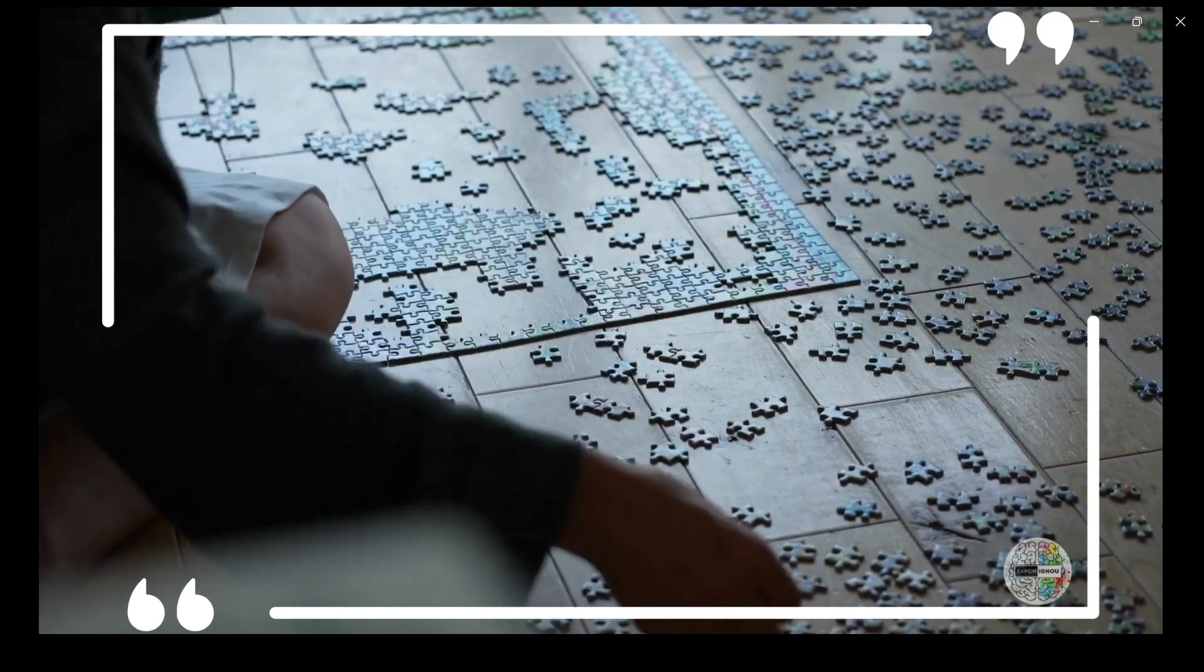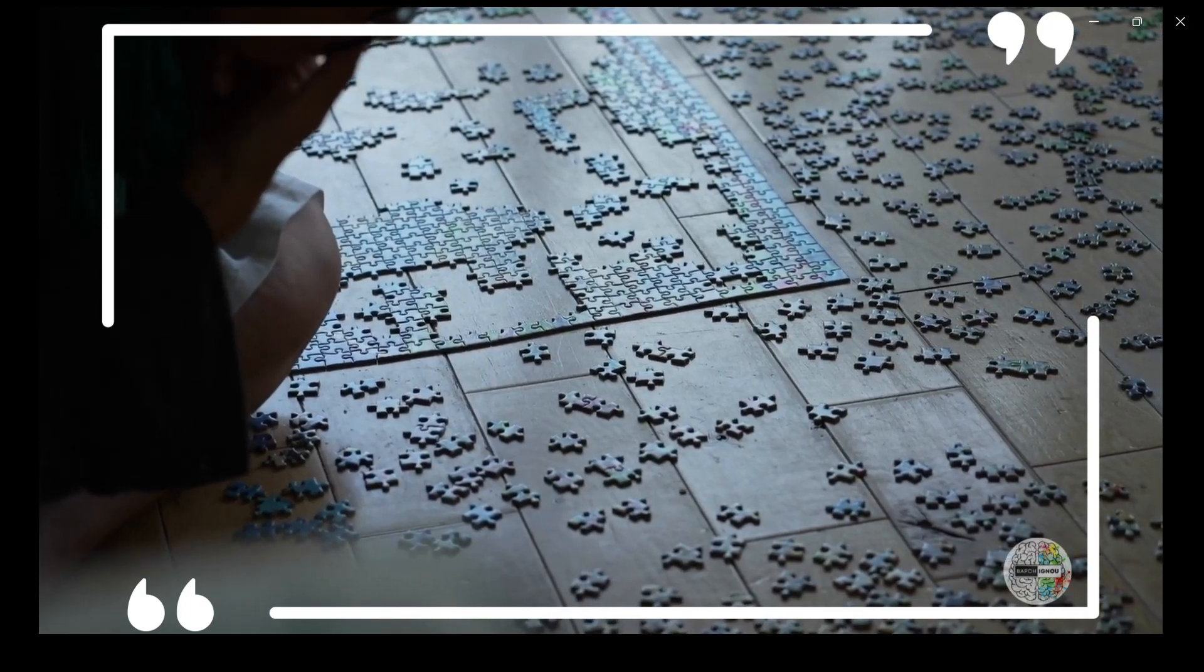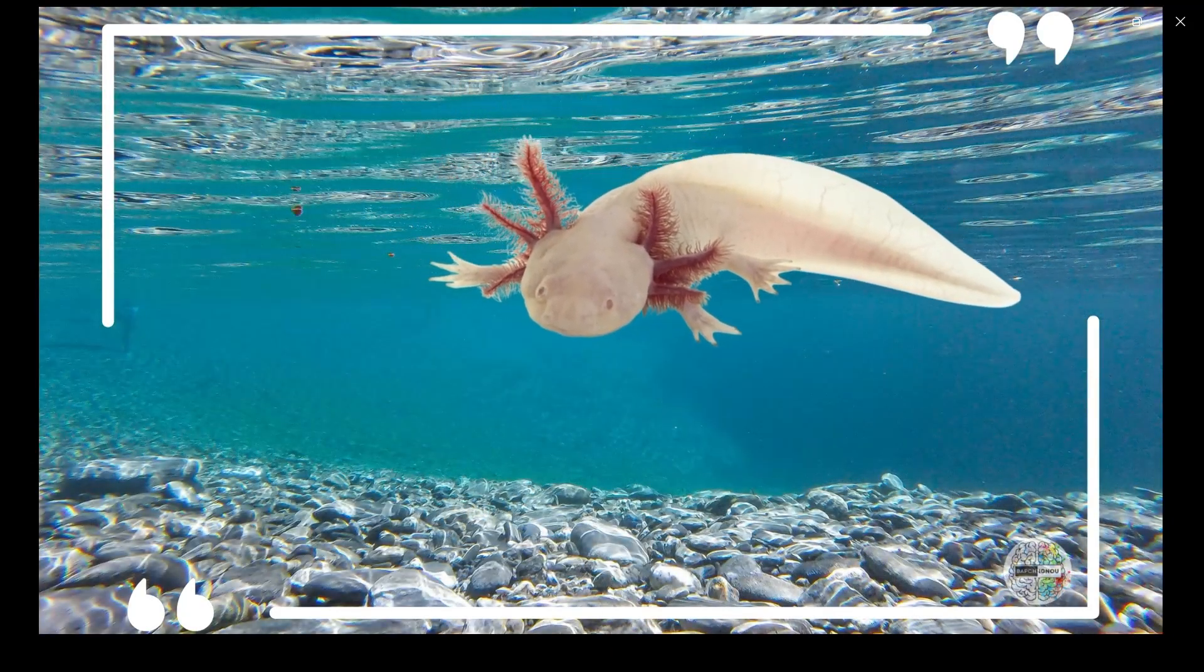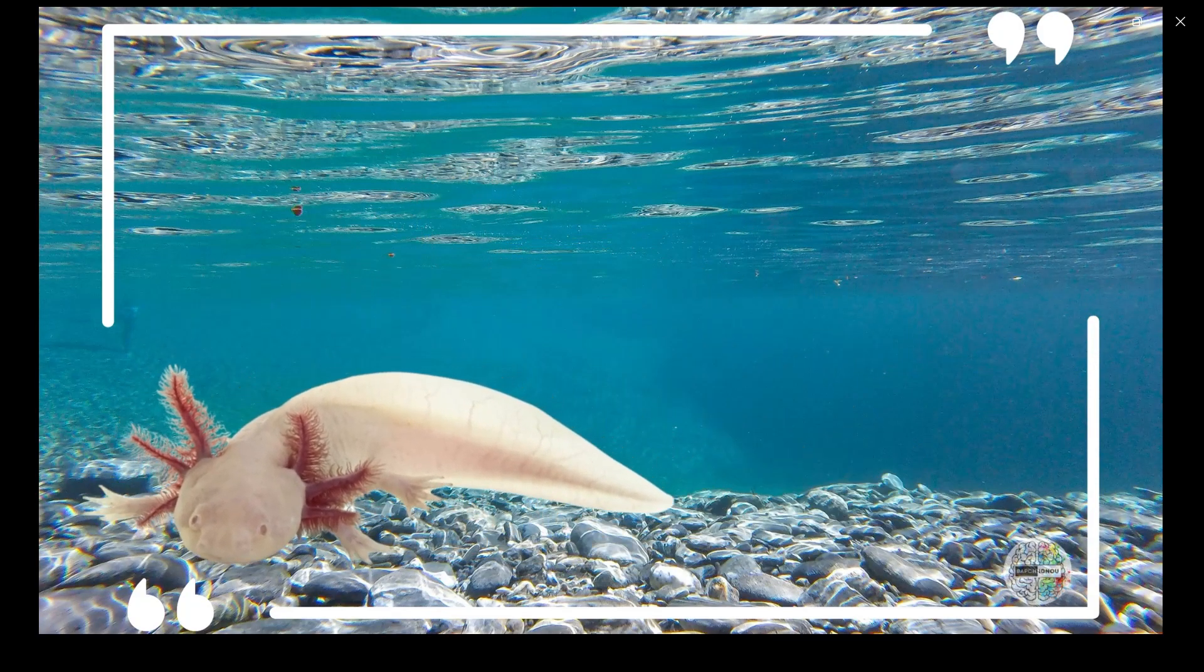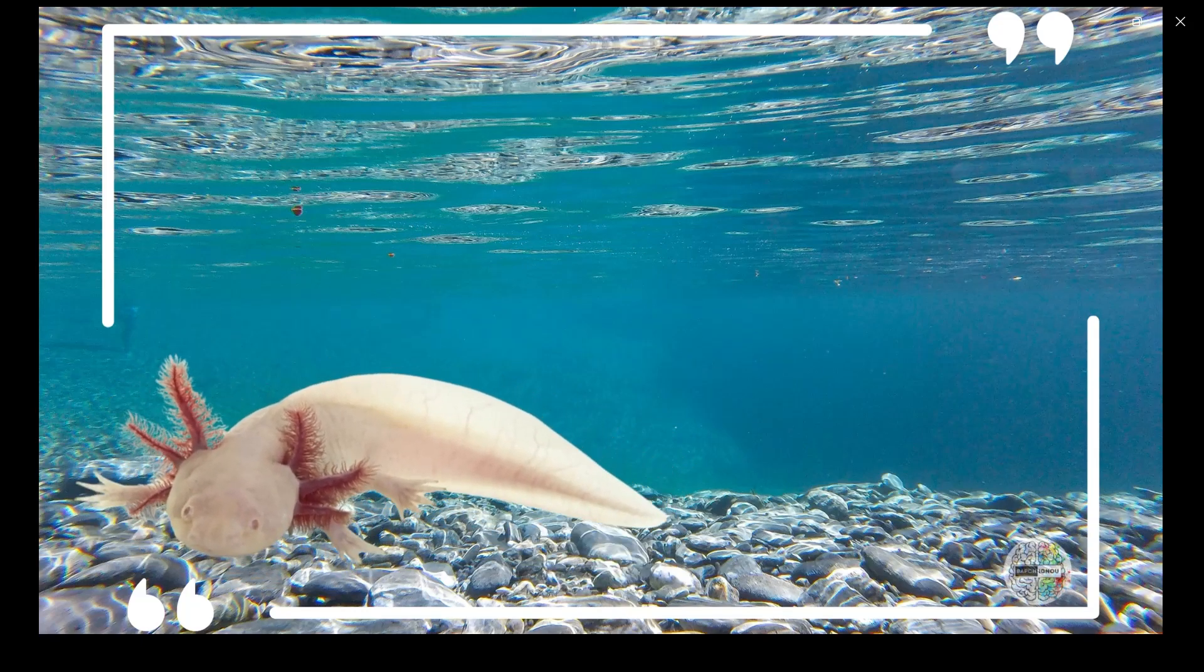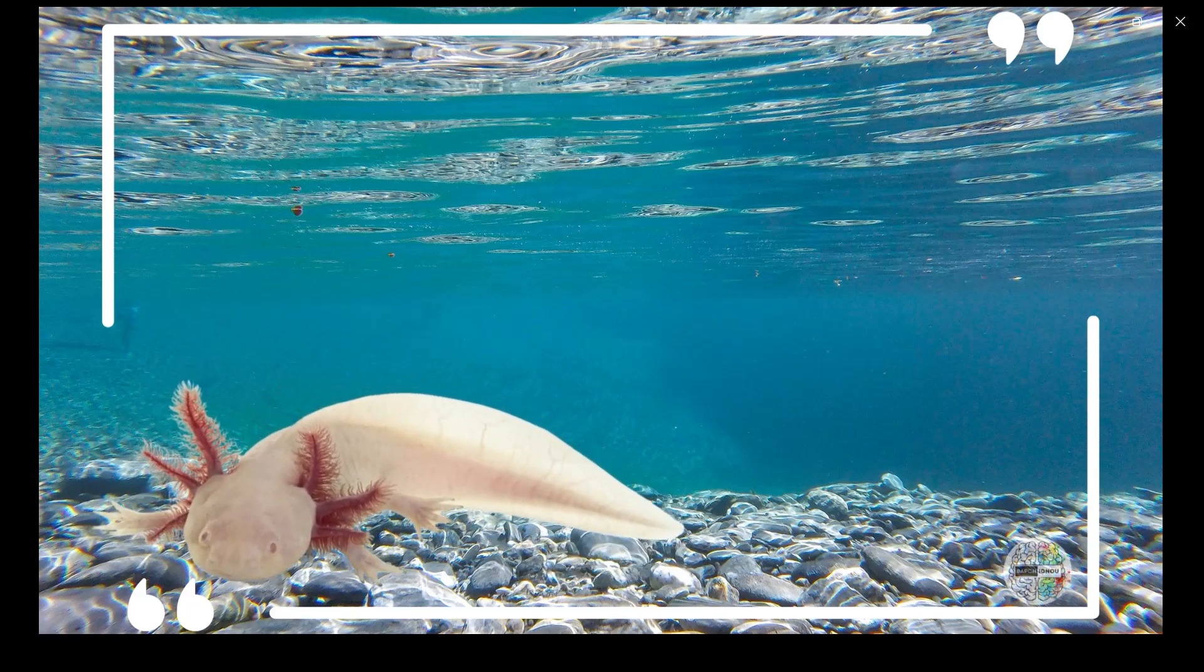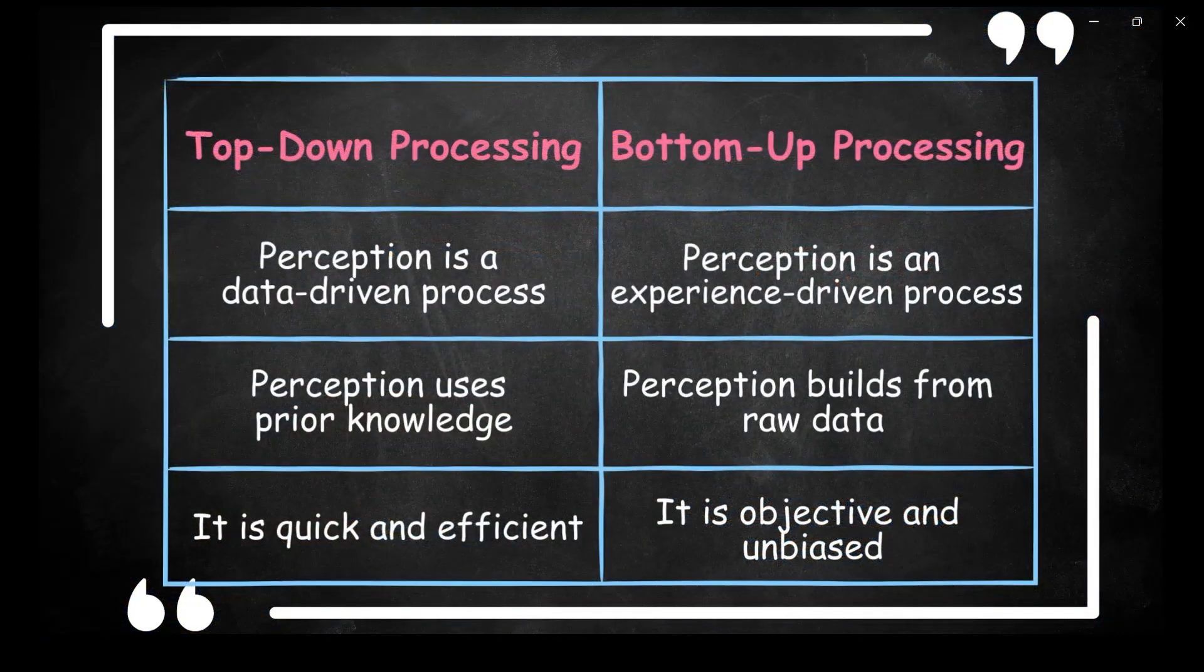For example, when you see a new animal you have never encountered before, your brain uses bottom-up processing. Imagine that this is the animal. Can anyone recognize it? No, right? That's because you've never seen it. Your brain tries to understand what it is with the shape, color and size to identify what it might be. I've shared this table for quick reference.